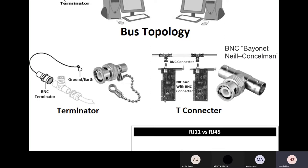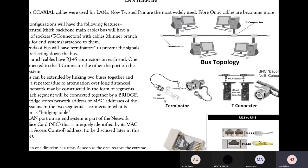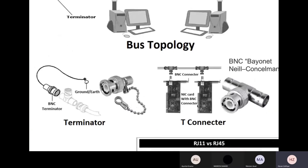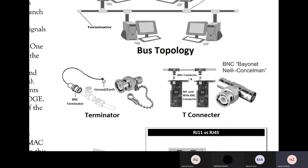If you don't have a network interface card, you will not be able to connect to any network — not the internet, not even a local network. The second thing you won't have is a MAC address. The MAC address is not your computer's address but is actually linked with your network interface card. If you change your network interface card, a new MAC address becomes part of your computer, because that address is linked to the NIC, not the computer itself.